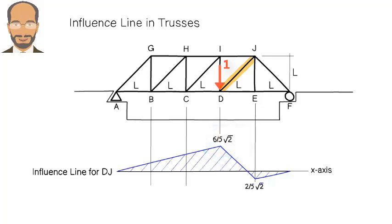How do we know the member is in tension? Because the point is above the x-axis. A positive value for the axial force means the member is in tension and a negative value means the member is in compression.